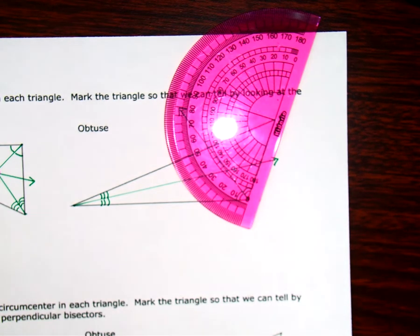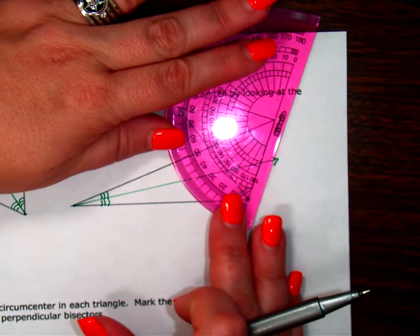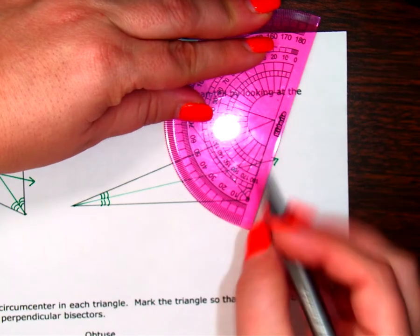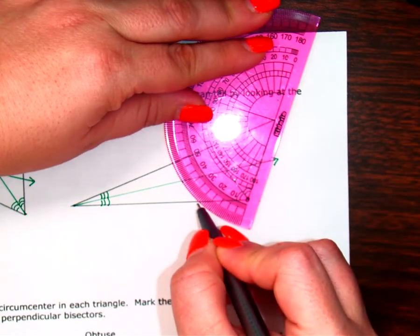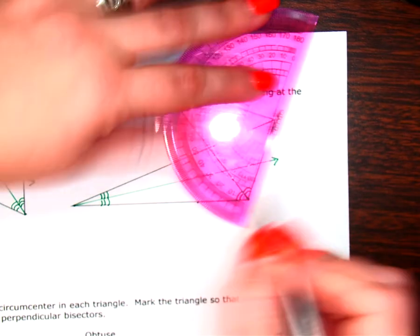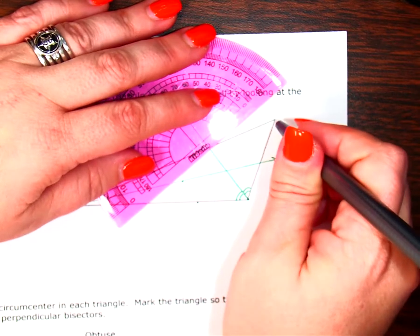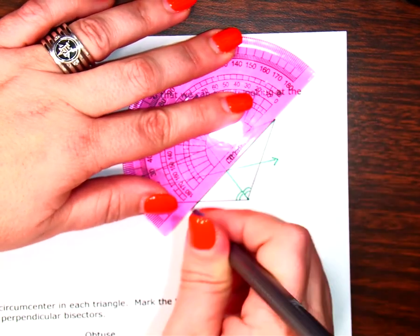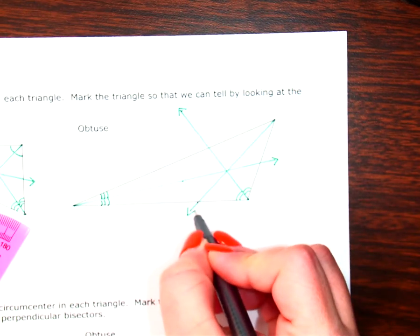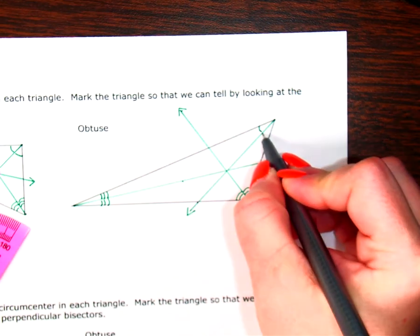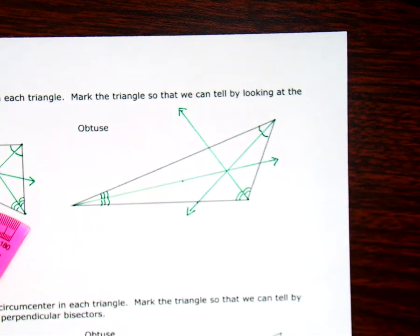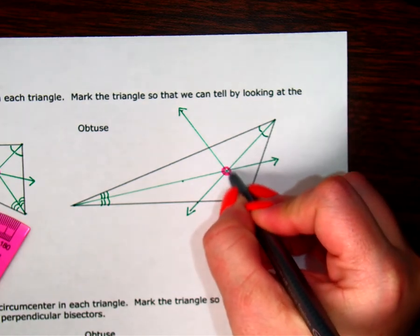And we might just end up having to make our dot a little bit bigger because they might not intersect. Perfect. But pretty close. So then this angle is different from these angles. And my center is right here. Okay.